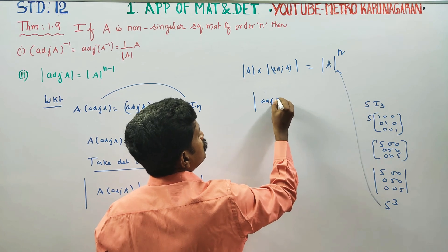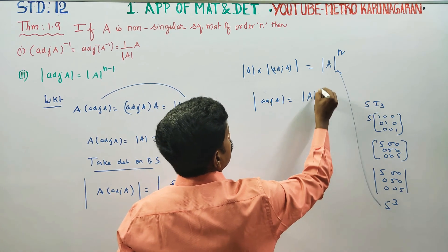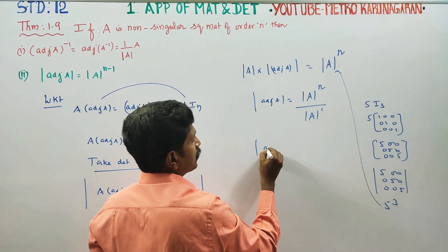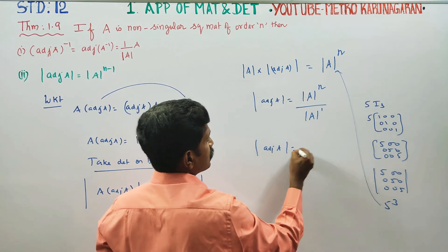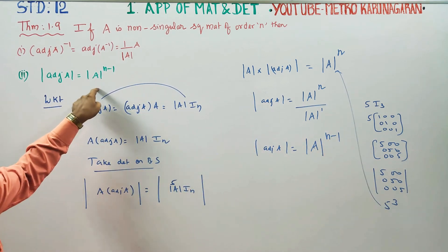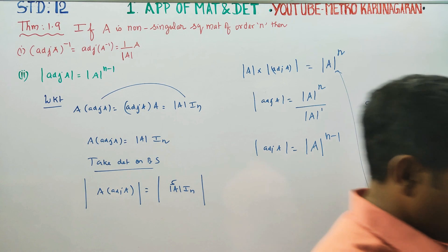Determinant of adjoint A is equal to determinant of A to the power n divided by determinant A. Therefore, determinant of adjoint A is equal to determinant of A to the power n minus 1. This ends the proof. Thank you.